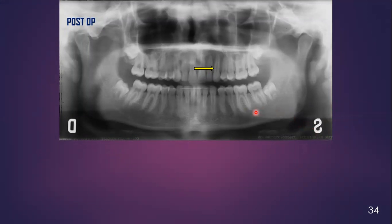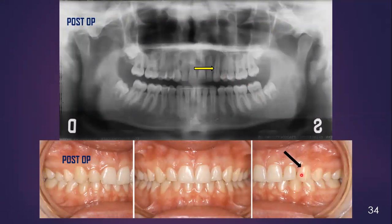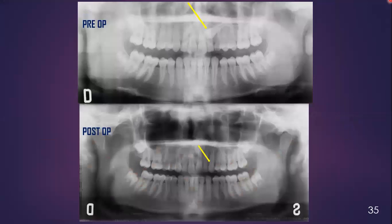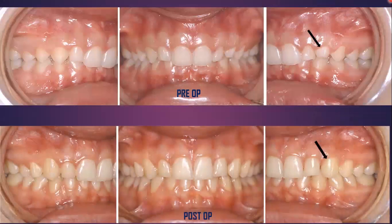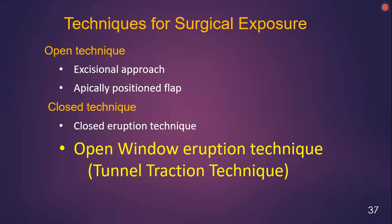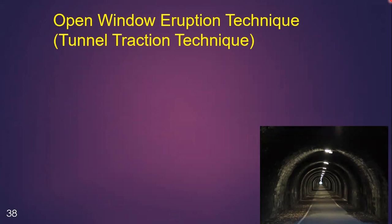Here you can see the post-op picture showing the normal erupted canine clinically. The impacted canine has now come to a normal erupted position. You can compare the pre-op and post-op OPG, as well as the clinical pictures. Now, in the closed technique, we come to the open window eruption technique, which indicates intraosseous movement of the maxillary canine — movement of the canine within the bone.